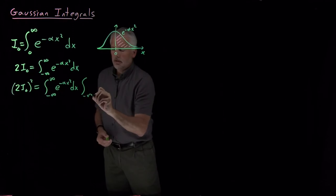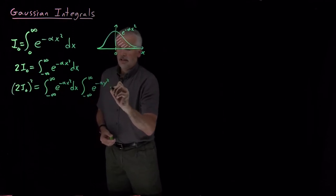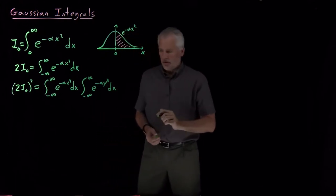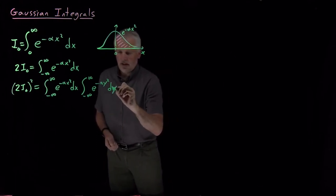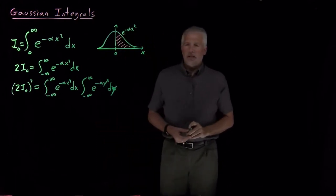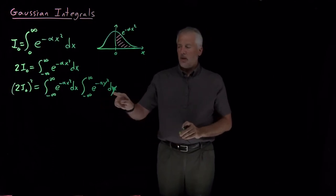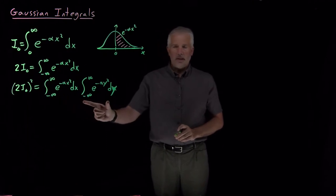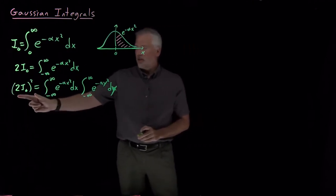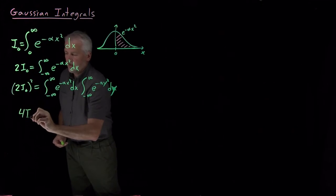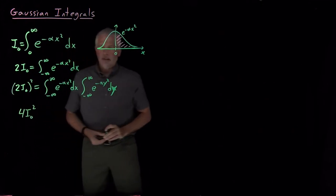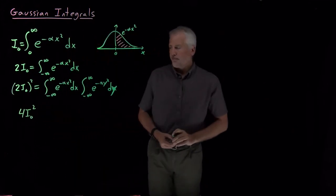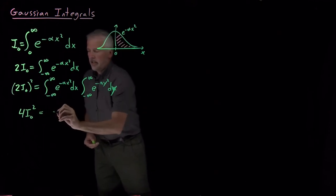And I'm going to multiply that by the same integral, and now instead of using x as my integration variable I'll use y, so e to the minus alpha y squared integrated over all values of y. I've just written down twice I naught and then I've written down the same thing multiplied them together, so that's two I naught quantity squared.